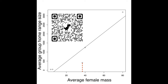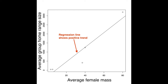For instance, this species — on average, the females have this mass, and on average, the primate groups of this species have a range size that is this size. So we put a dot here for this species on this graph, and we do that for each species. Using regression analysis, we can determine if there is a positive relationship between average female mass and average home range size across all species. As you can see, there is a positive trend as indicated by the regression line, suggesting that home range sizes of primates change as females of a primate species get larger.